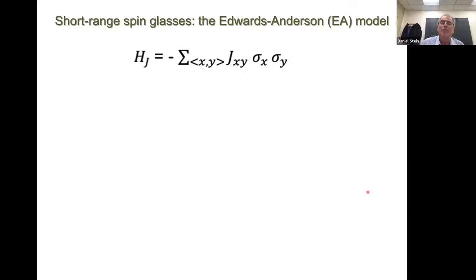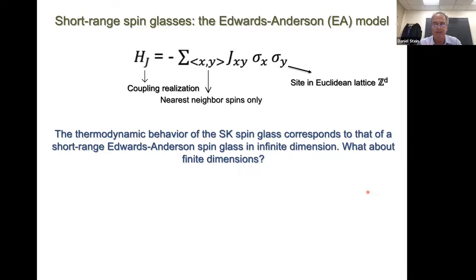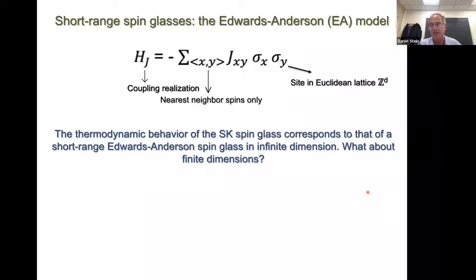Now let me turn to short-range spin glasses. Mean field models typically correspond to the model in infinite dimensions — what about finite dimensions? Usually mean field theories are not good guides near the critical temperature, but they are traditionally very good guides for looking at the very low-temperature properties of condensed matter systems where thermal fluctuations are small. In particular, they are usually very good at telling you the nature of broken symmetry and the order parameter. So what about spin glasses?